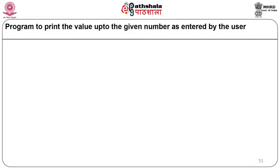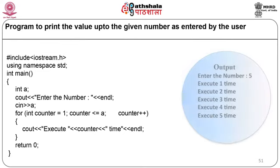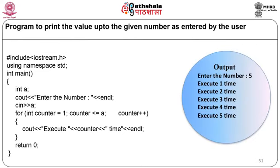Another for loop program prints values up to a user-given number. An integer 'a' is declared, the user enters a value, and the loop runs: for (int counter = 1; counter <= a; counter++) { cout << 'execute' << counter << 'time' << endl; }. If the user enters 5, it displays 'execute 1 time' through 'execute 5 time'.